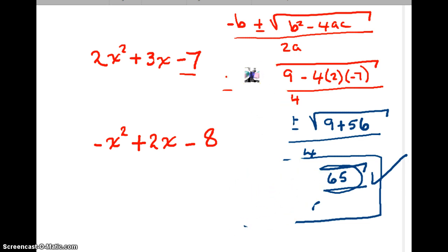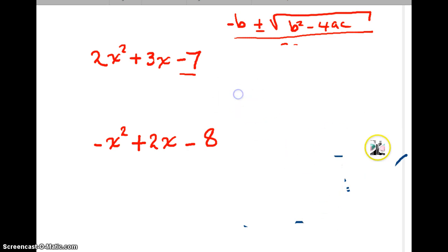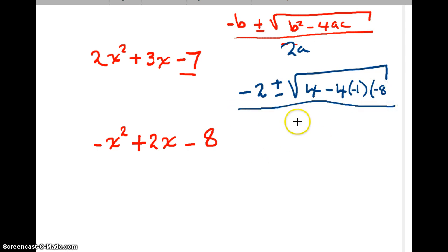Let's do another one. So we are looking at this time negative x squared plus 2x minus 8. So negative 2 plus or minus b squared 4 minus 4a. a here is negative 1. C here is negative 8 divided by 2 times negative 1. Negative 2 plus or minus 4. Again, we got negative 4 times negative 1 is positive 4. So positive 4 times negative 8 is negative 32. We have 4 minus 32 divided by negative 2. When I get this far,